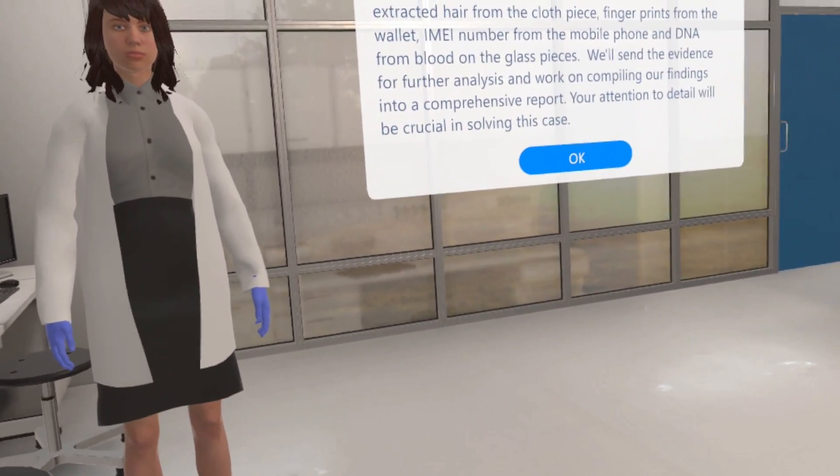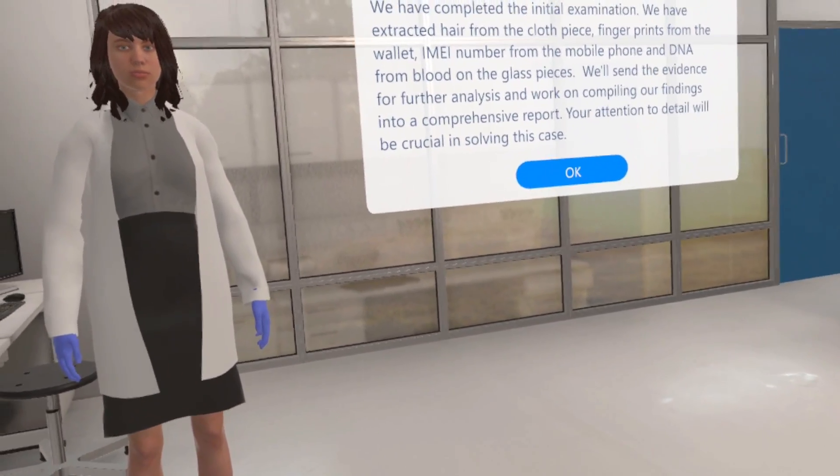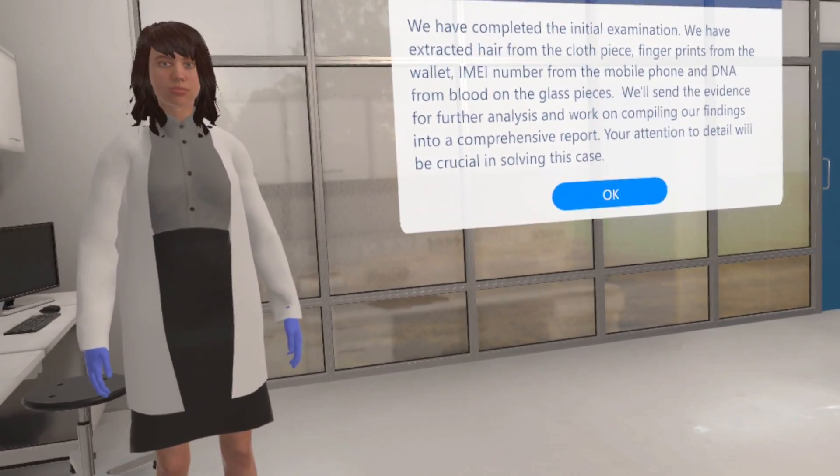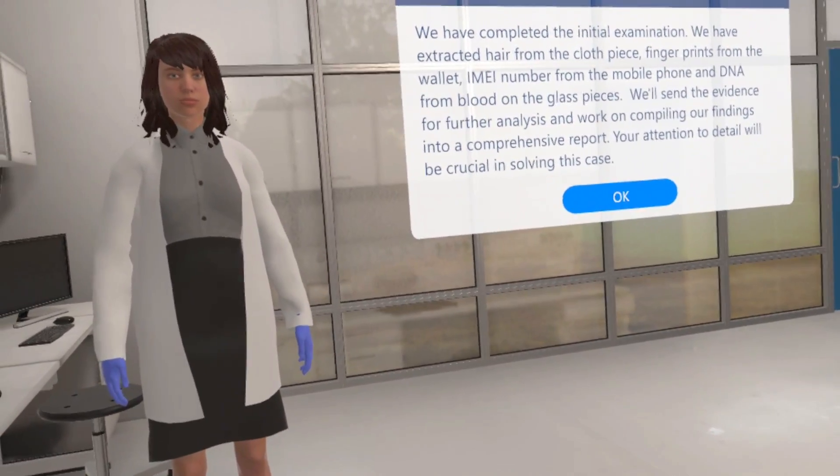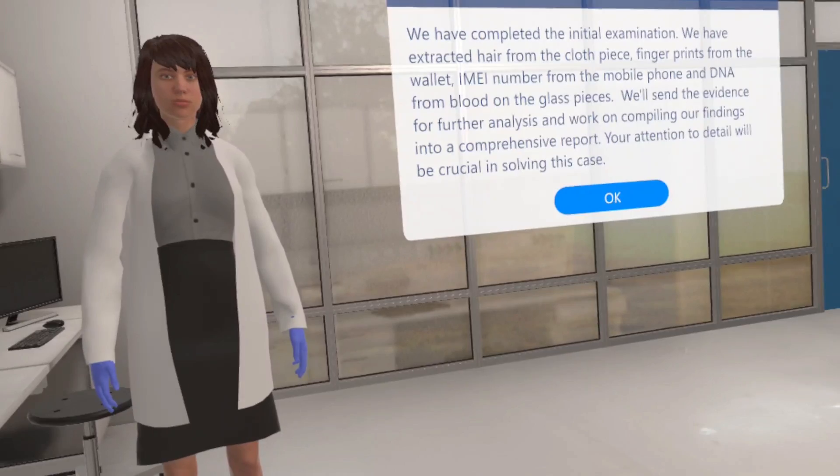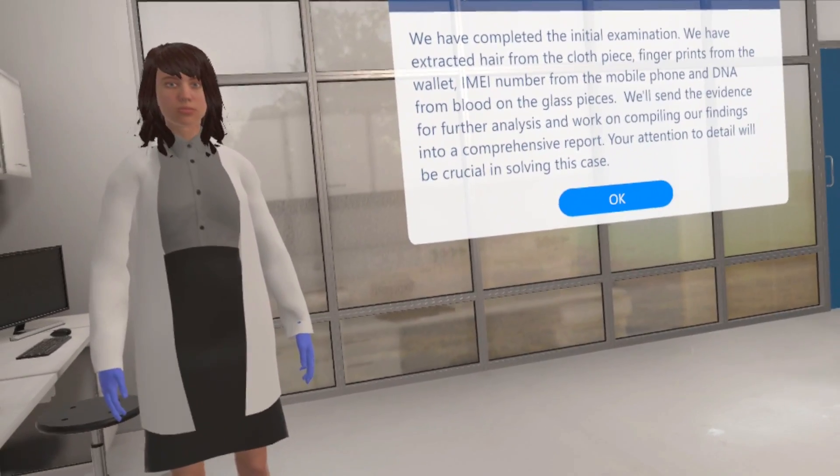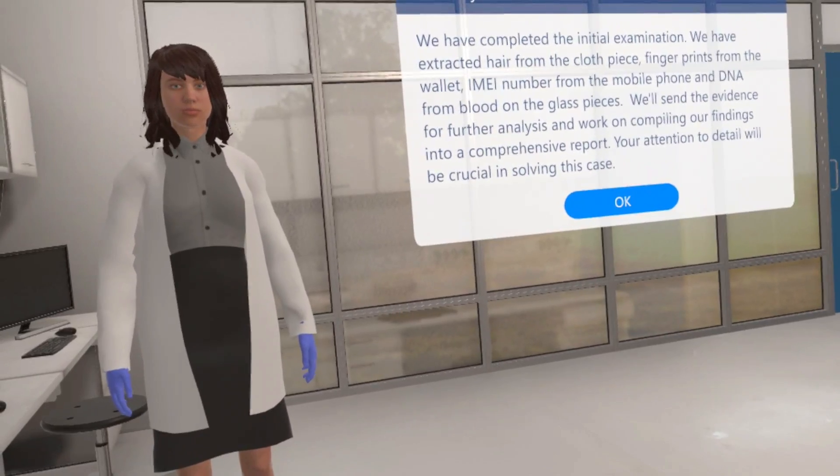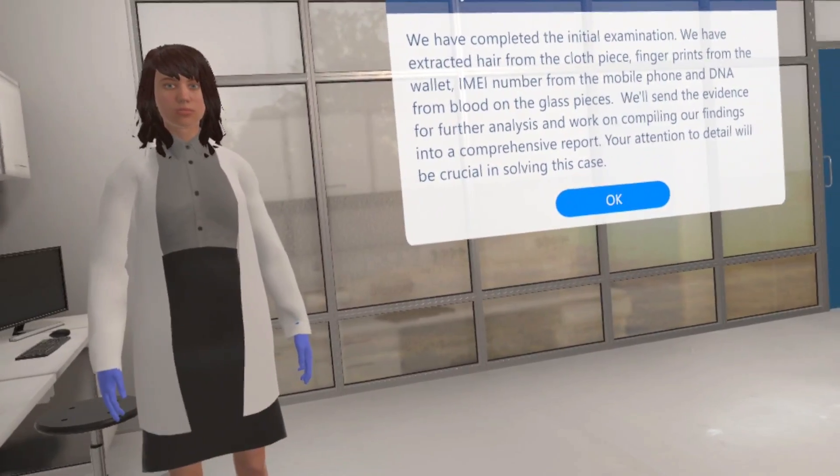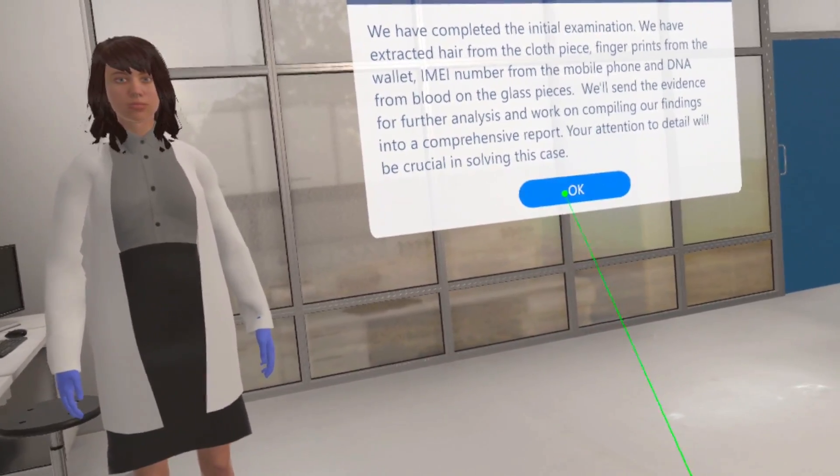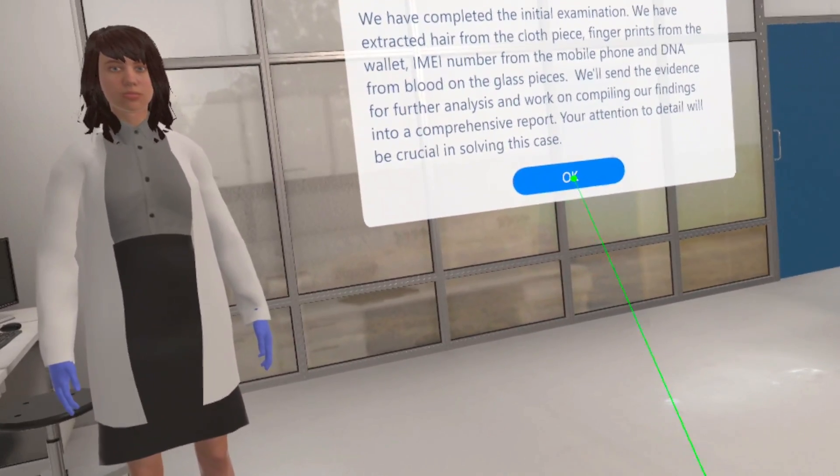We have completed the initial examination. We have extracted hair from the cloth piece, fingerprints from the wallet, IMEI number from the mobile phone, and DNA from blood on the glass pieces. We'll send the evidence for further analysis and work on compiling our findings into a comprehensive report. Your attention to detail will be crucial in solving this case.